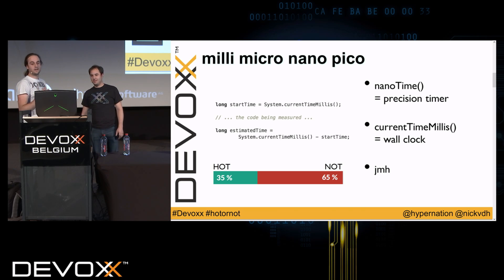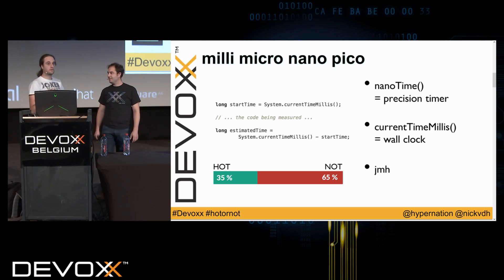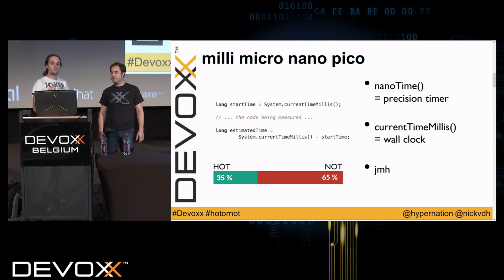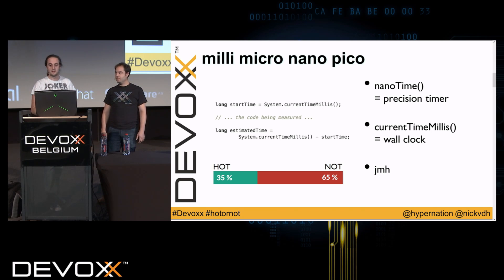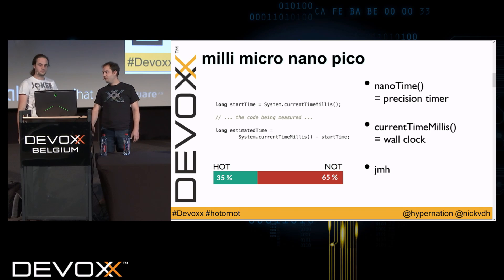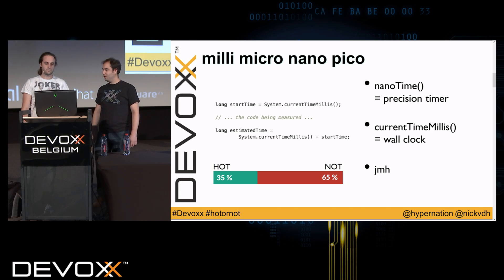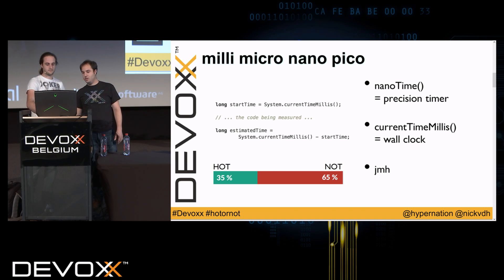What you can do instead is use nanoTime. The nanoTime is always relevant within the same container — you can't use it to compute a date, but if you just want to measure how long something took, System.nanoTime is a precise timer. But even better would be to use JMH. It's the de facto standard for microbenchmarking, as many of you who come to DevOx know.